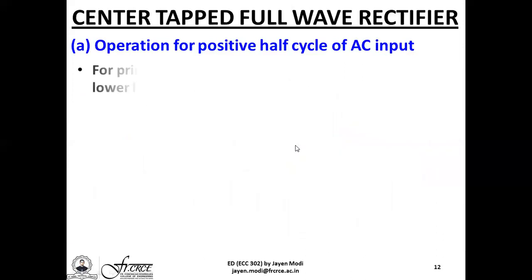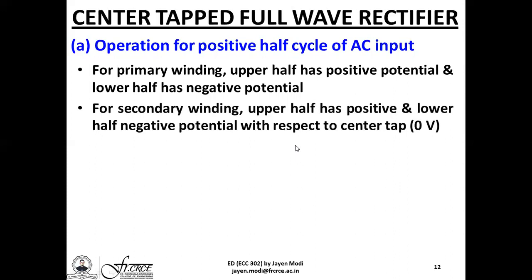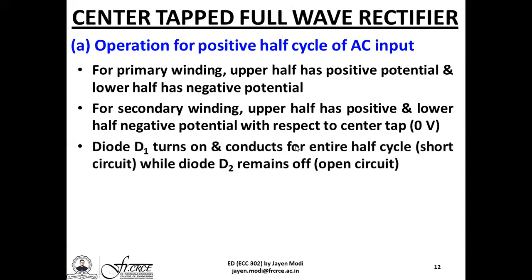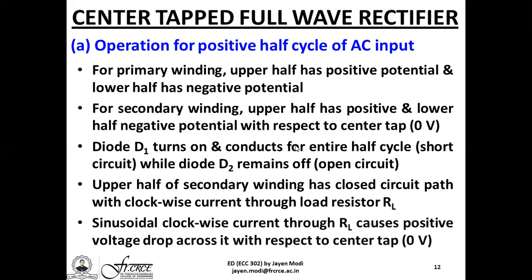For the positive half cycle, the upper half of the secondary winding has positive and the lower half negative potential with respect to the center tap at 0V. Diode D1 turns on and conducts for the entire half cycle from 0 to π, behaving like a short circuit, while D2 remains off. The upper half establishes a closed circuit path with clockwise current through RL, causing a positive voltage drop across it.